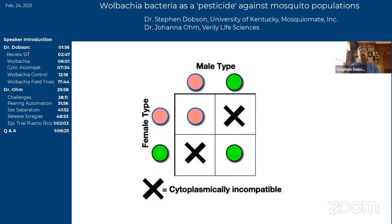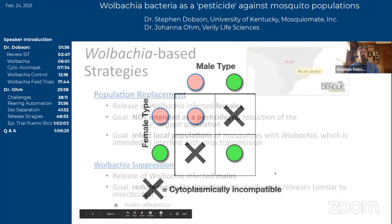A second example: Aedes aegypti mosquitoes are not naturally infected with Wolbachia. This first unidirectional example applies there. The second example might be Aedes albopictus, which is naturally infected. In that case, instead of uninfected individuals, we have two different types of Wolbachia — a red type and a green type. The same rule applies: if the male has an infection type that's different from his mate, it's an incompatible cross. It's only when both male and female have the same Wolbachia type that a compatible cross occurs and the eggs hatch.